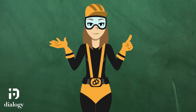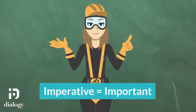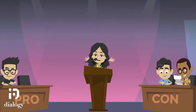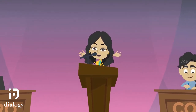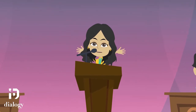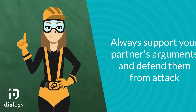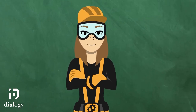Sometimes your opponent will not provide a rebuttal to one of your team's arguments. In this case, it is imperative to point this out to the judge. You can say: 'Ladies and gentlemen, my partner explained to you that mobile phones are harmful to students' eyes and that eyes are critical. We have heard absolutely no response to this argument, which means that my opponents accept the argument to be true.' Remember, the debate is a team activity. You should always support your partner's arguments and defend them from attack. At the end of the debate, you want all of your team's arguments standing strong. Now go out there and rebuild!